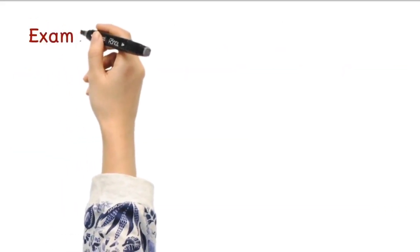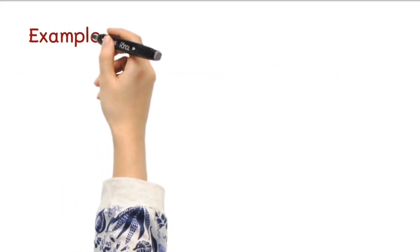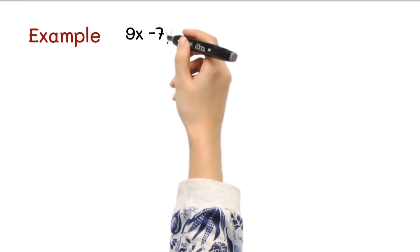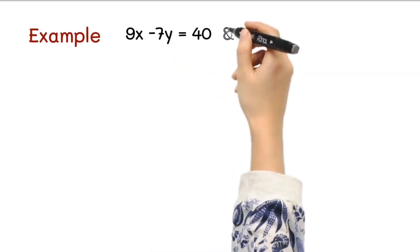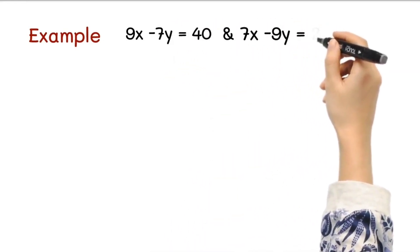Let's take one more example. Example: 9x - 7y = 40 and 7x - 9y = 24.